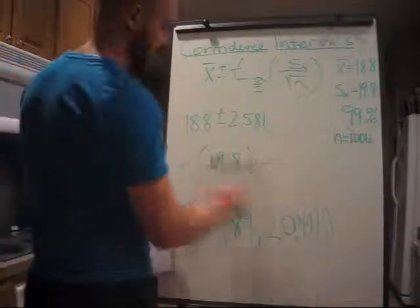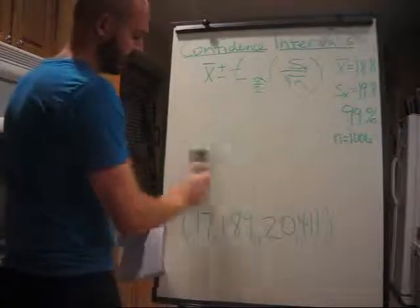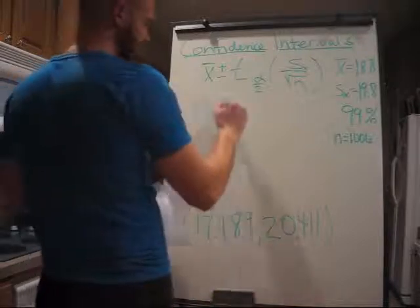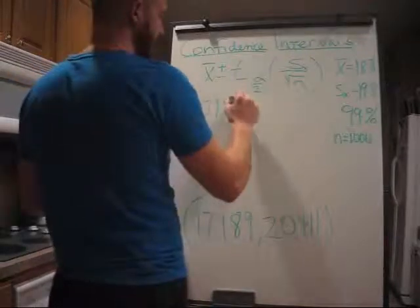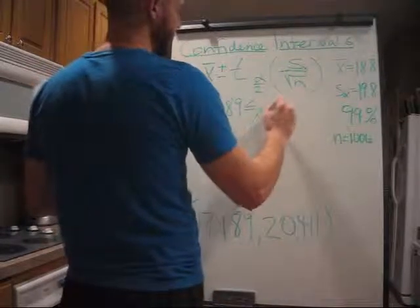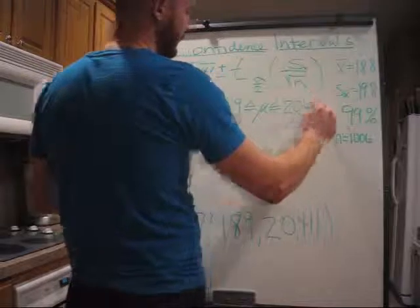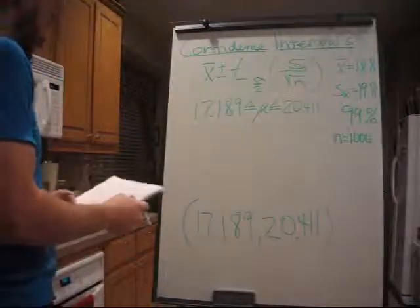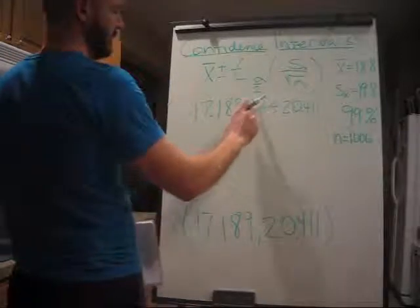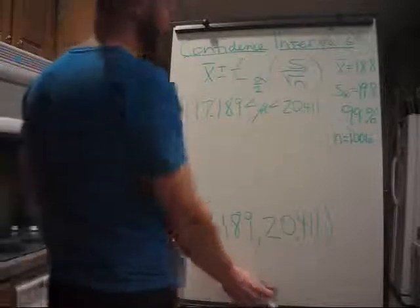Another way to write that is 17.189 is less than or equal to mu, less than or equal to 20.411, and it may not actually be or equal to. I don't think it is. But either way, you get it.